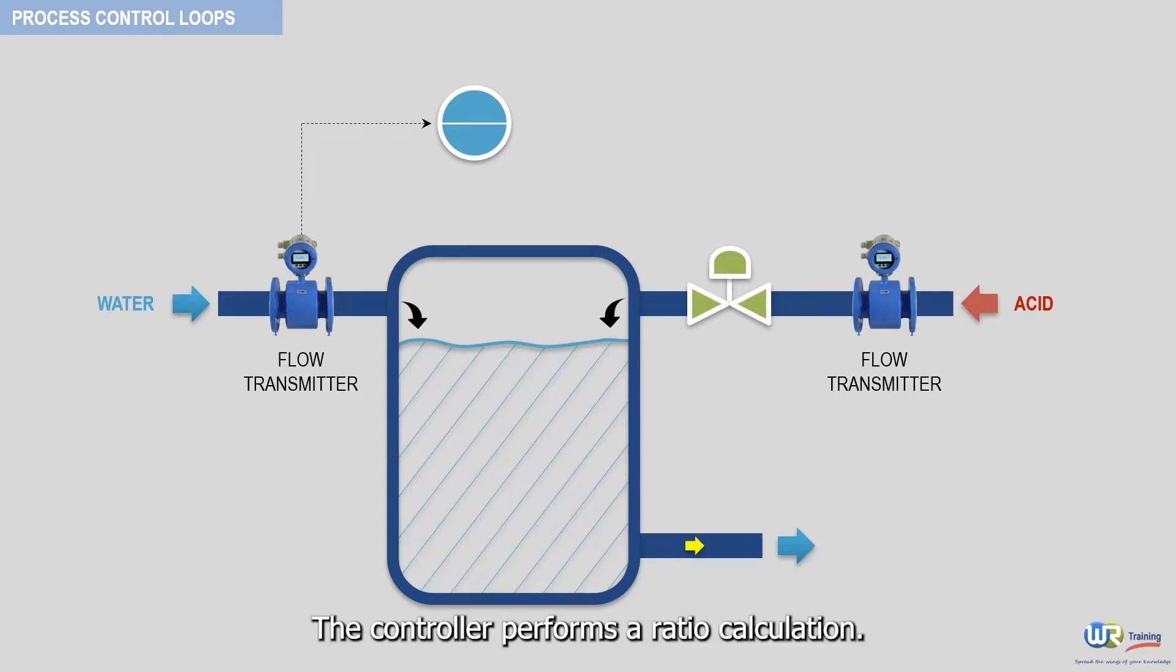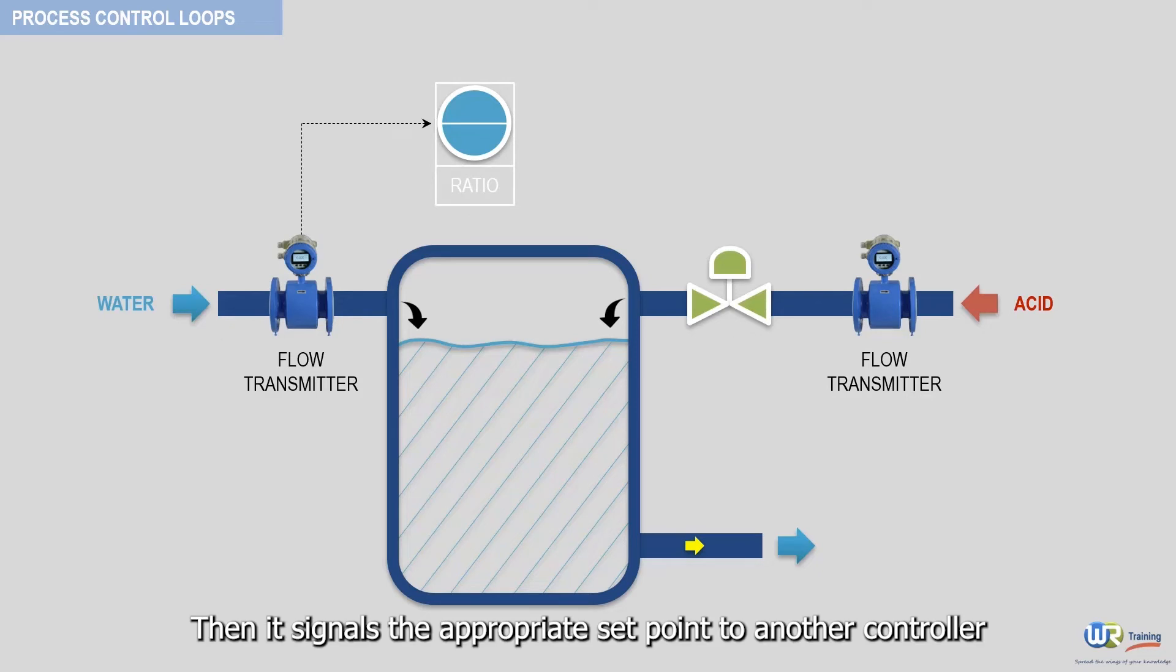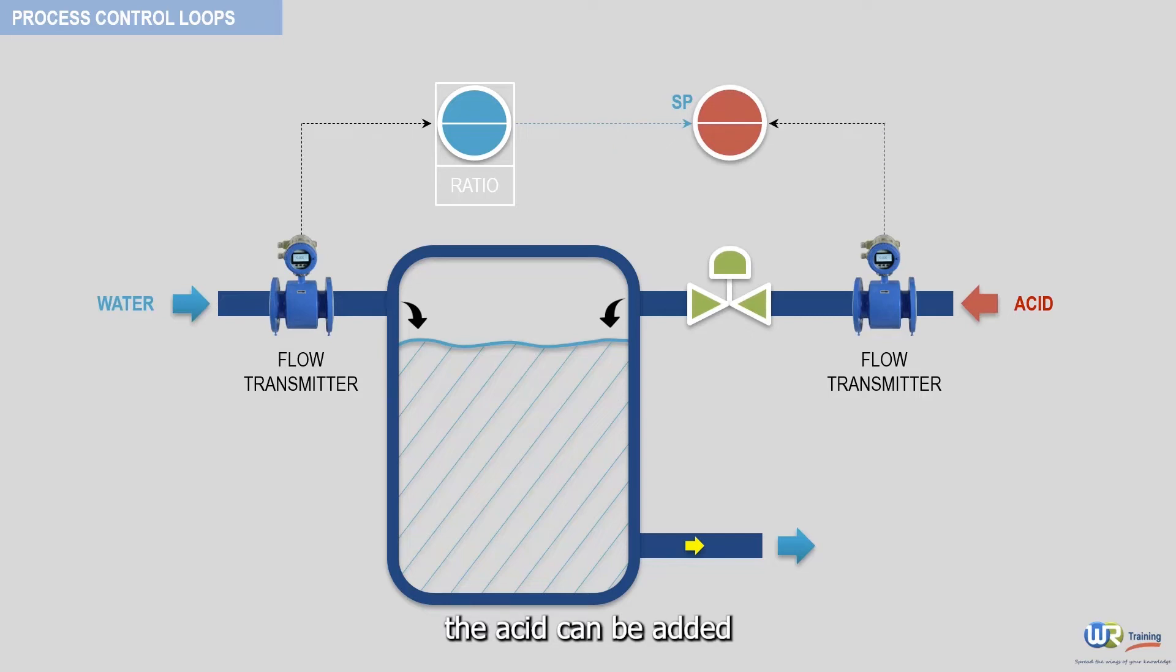The controller performs a ratio calculation. Then it signals the appropriate set point to another controller that sets the flow of the acid so that the proper proportion of the acid can be added.